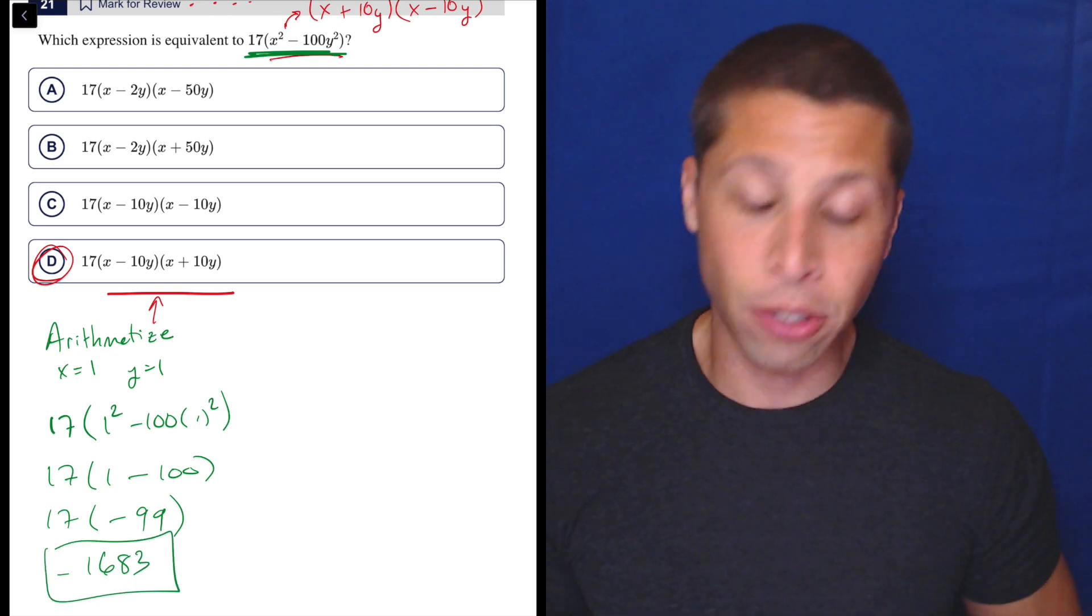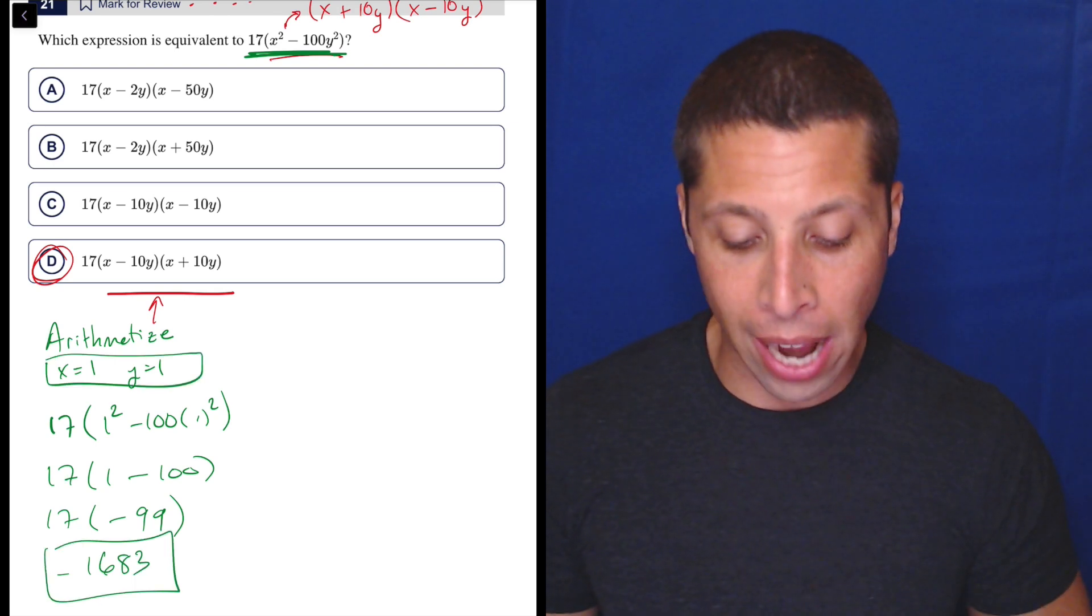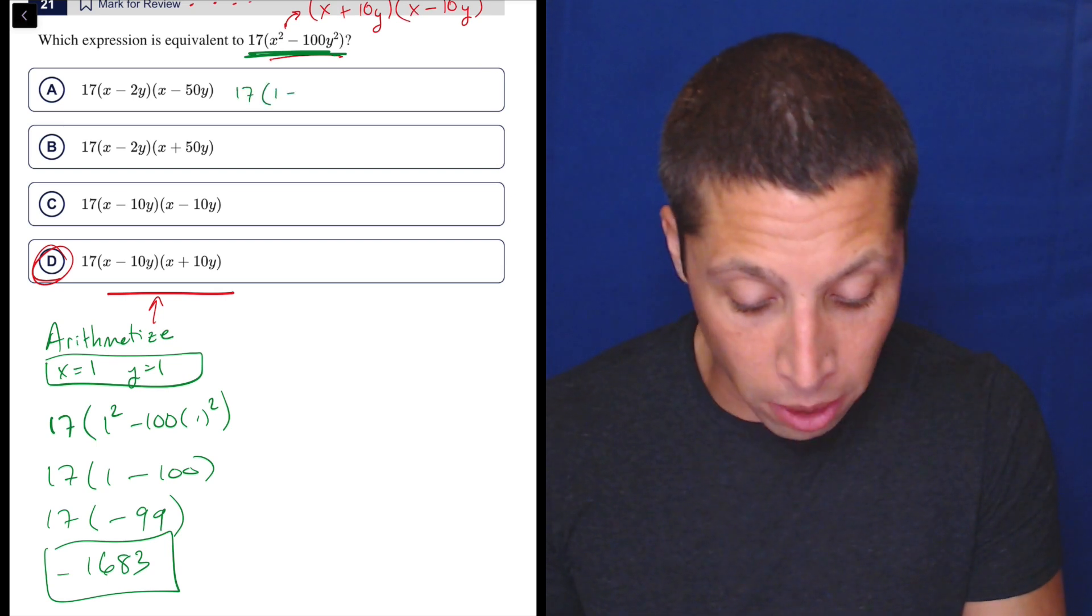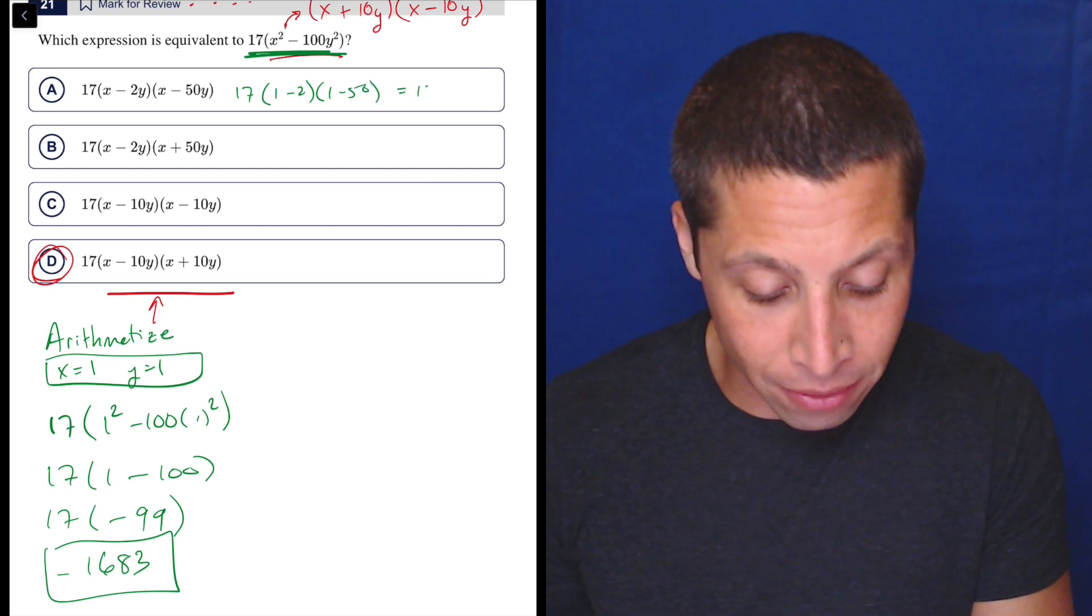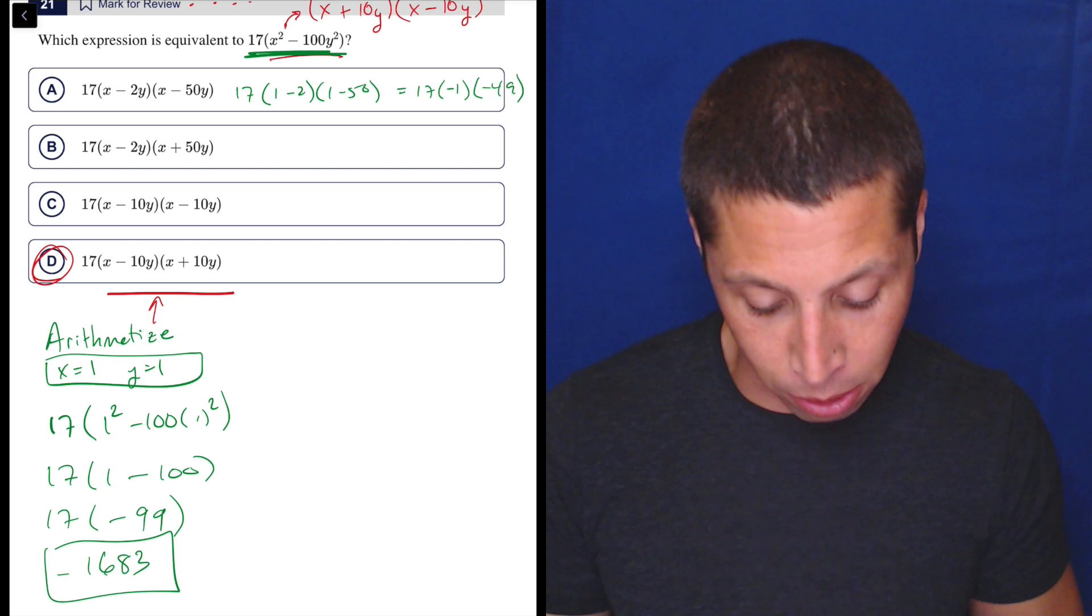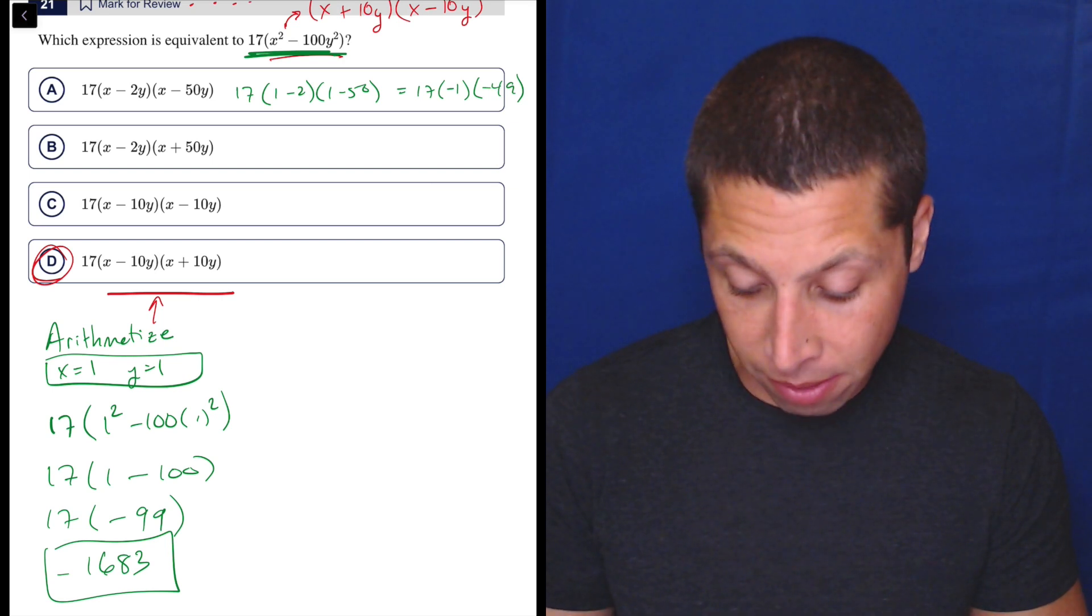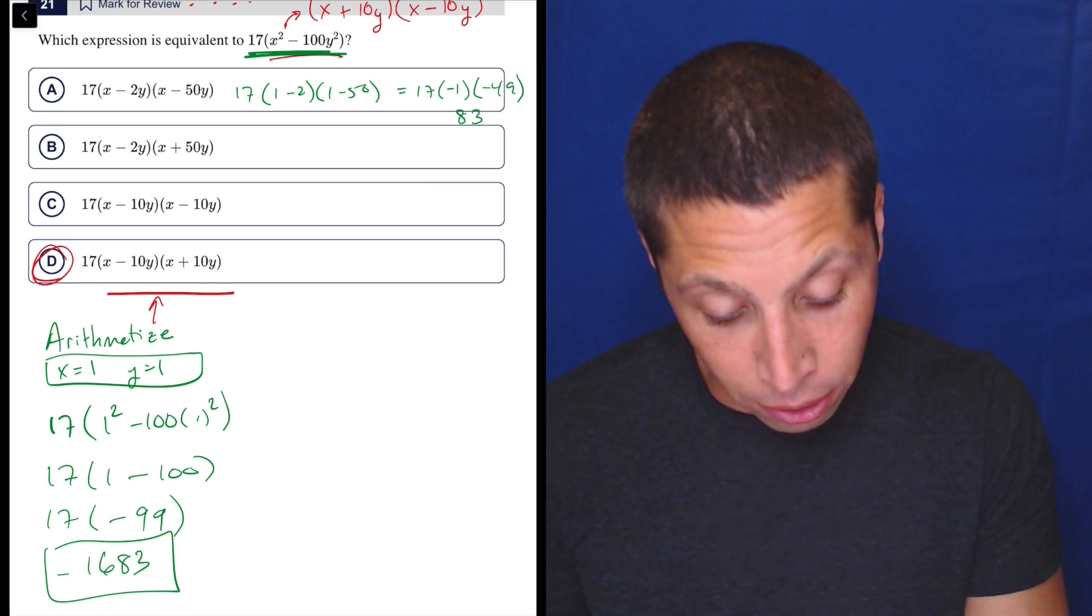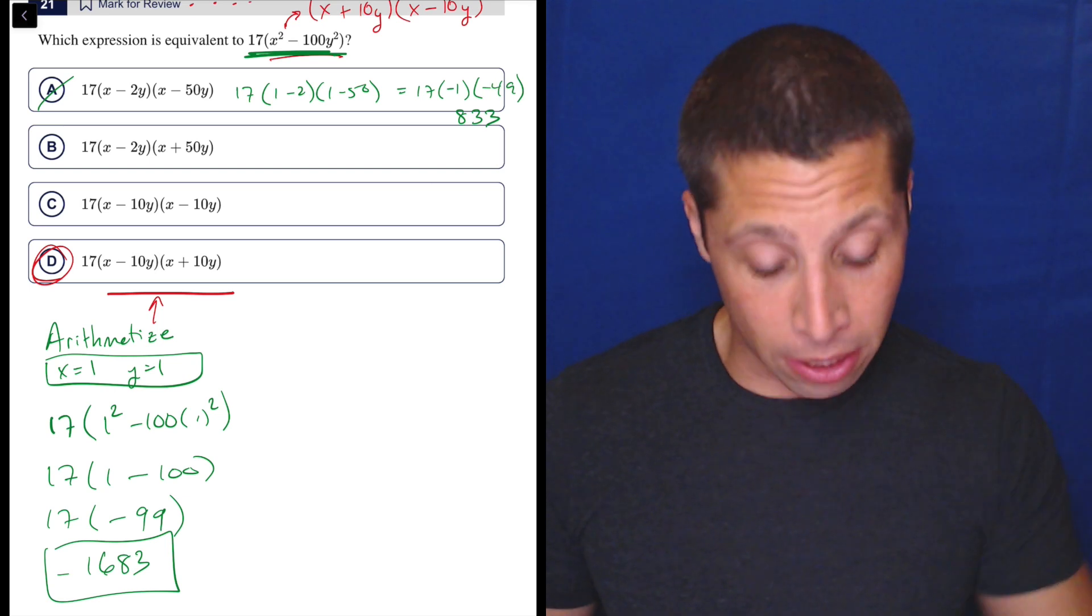So I am looking for an answer choice that gives me that when I plug 1 in for x and y. So, if I didn't know the answer, I would just go down the line here. So this is 17 times 1 minus 2 times 1 minus 50. So that's 17 times negative 1 times negative 49. So I don't think that's going to work. 17 times negative 1 times negative 49 is 833. And if I did the same thing here, so that's because it's a different number, it doesn't work, right?